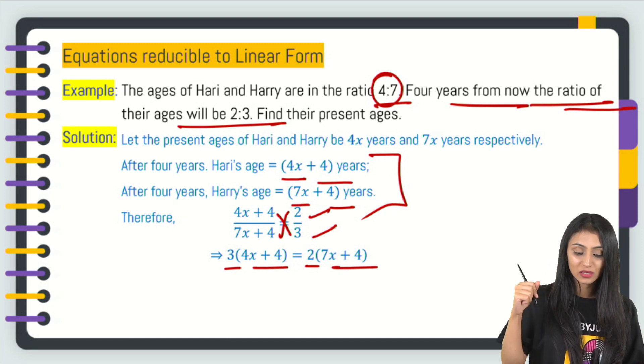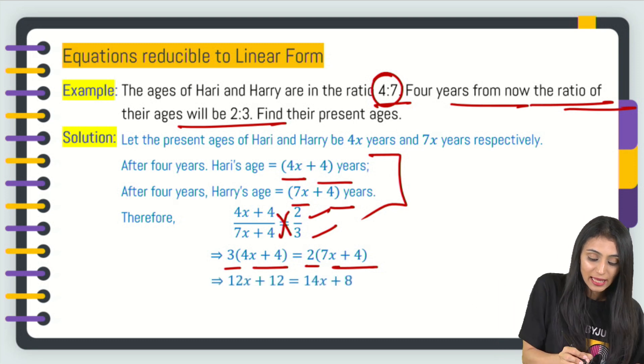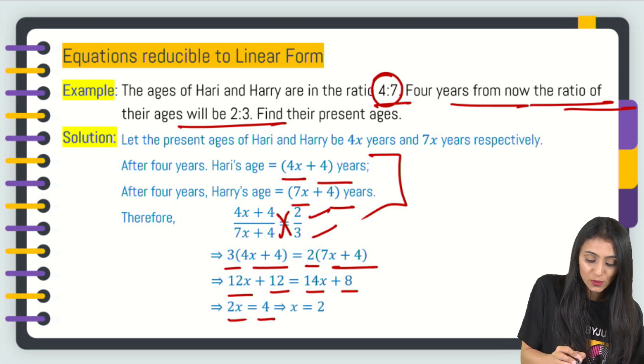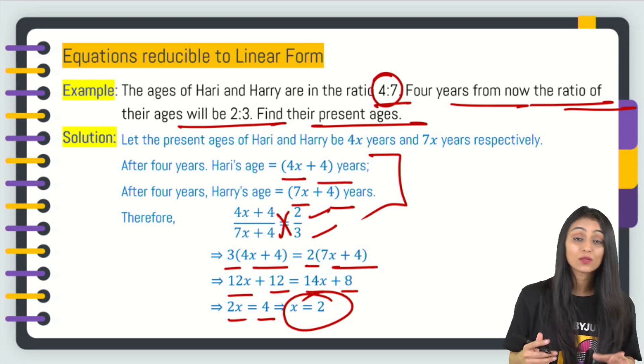I'm going to multiply this 3 with whatever is written inside and 2 with whatever is written inside. That's going to be 12x + 12 = 14x + 8. On simplifying this, you get 2x = 4, so x is 2.